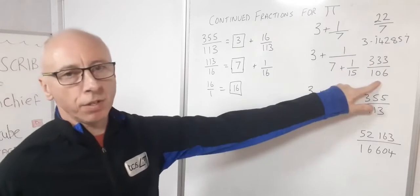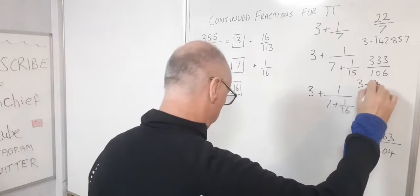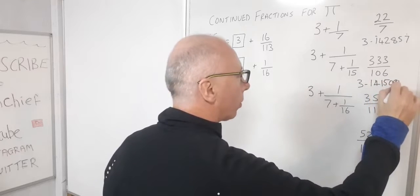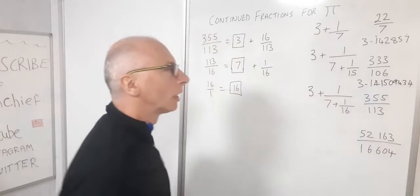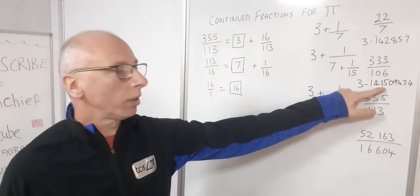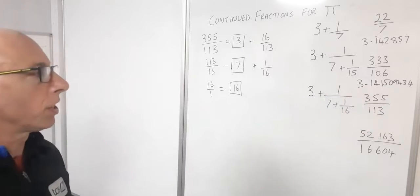What about 333 over 106? Well, we know that is 3.141509434. So we're getting a little bit closer now. We've got 3.141, so that's looking good now. So that's made an improvement on the third digit already.